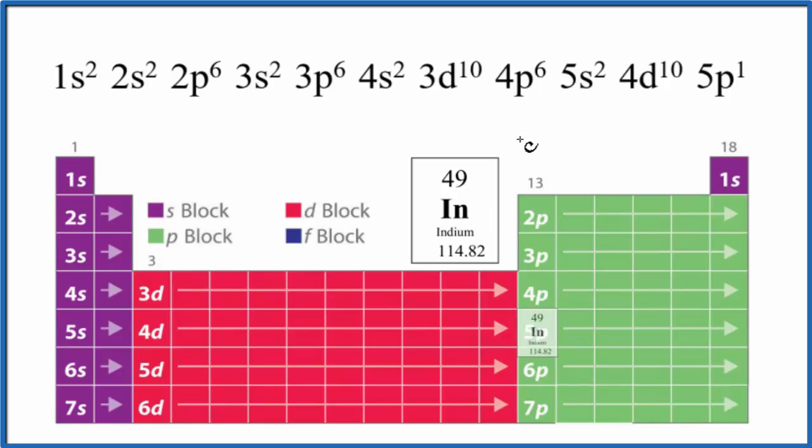If you wanted to abbreviate this, you could find the noble gas before indium. That's right here. That would be krypton. Its electron configuration is from the 1s2 to the 4p6. So all of this right here is the electron configuration for krypton.